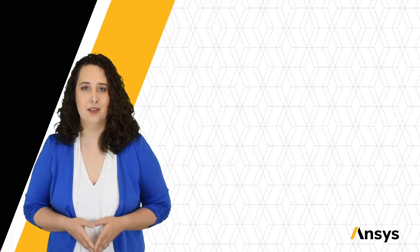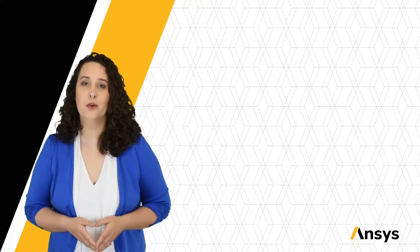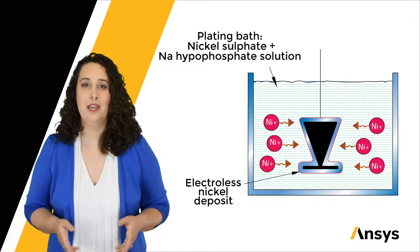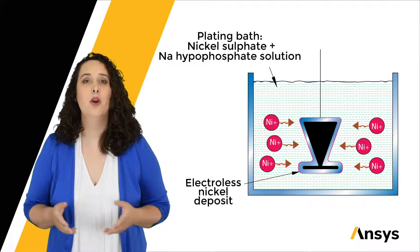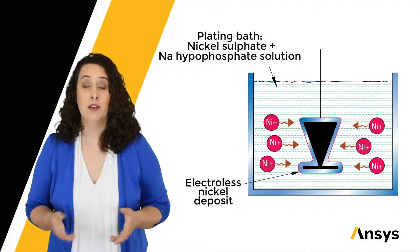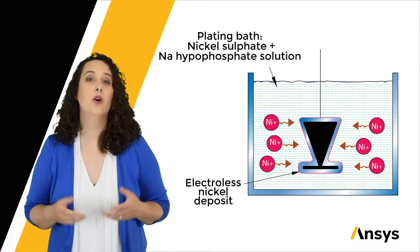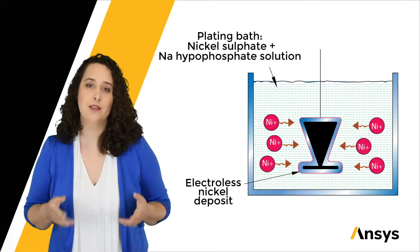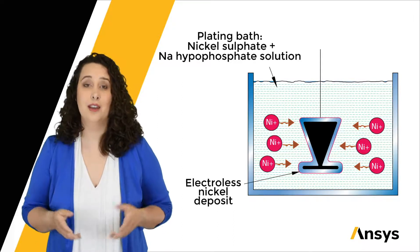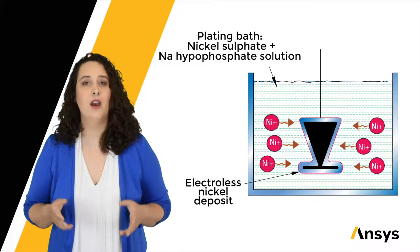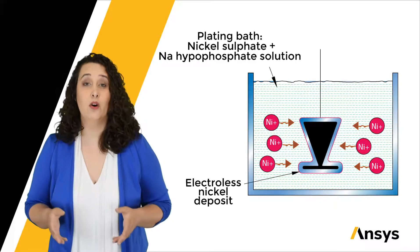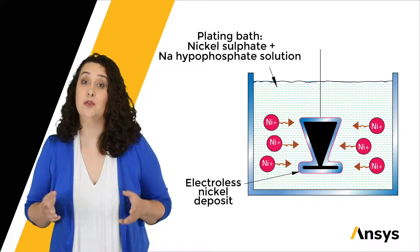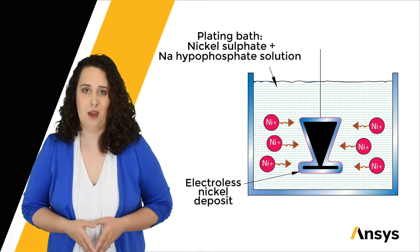Trying to deposit metal onto something that's not conductive? No problem. Electroless plating does not use any electricity and instead relies on a chemical reaction where we're depositing metal onto the catalytic surface of our part using a chemical reduction reaction. This is all thanks to the chemical composition of the plating bath.